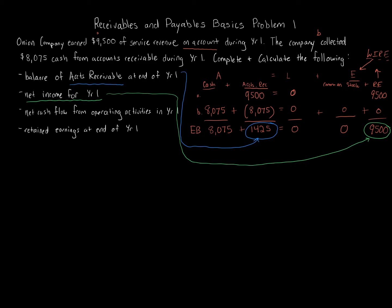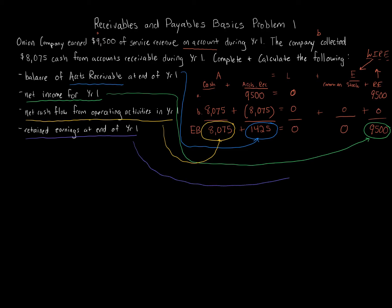The net cash flow from operating activities: looking at the cash balance and the change from these transactions, it's going to be the balance in the cash account — $8,075. Finally, retained earnings at the end of year 1 happens to be the same as net income because there was just that one revenue event — $9,500.